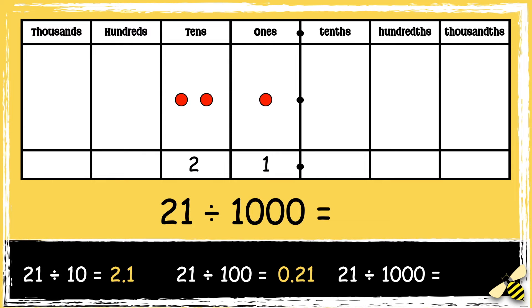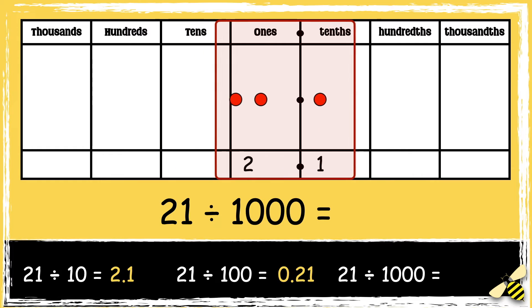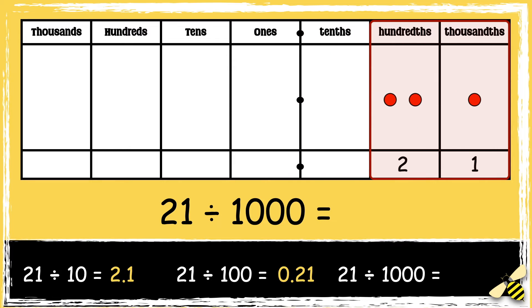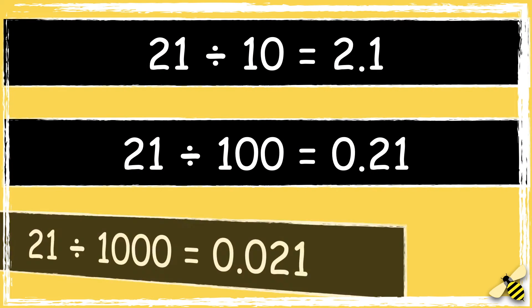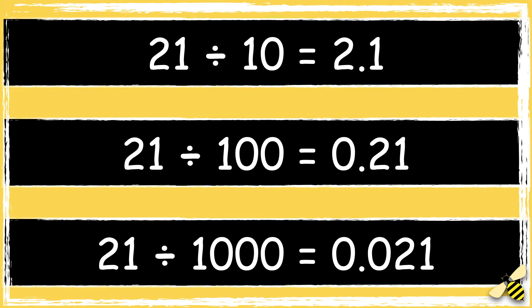Now let's divide the number by 1000. When we divide numbers by 1000, the digits move three spaces to the right. We need to use zero as a placeholder to show that there are no ones, and also zero as a placeholder to show that there are no tenths. So the answer is 0.021. We have divided a two-digit number by 10, 100, and 1000.